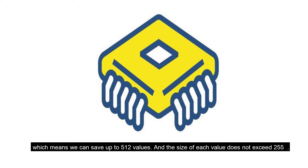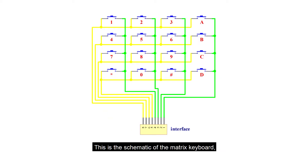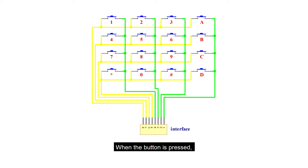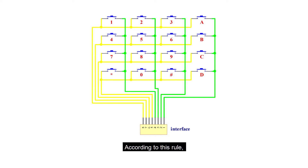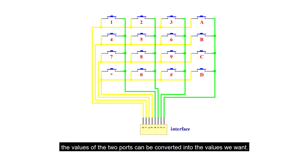This is the schematic of the matrix keyboard. Each button is equivalent to a switch. When the button is pressed, the two ports will be set to 1. For example, when A is pressed, pin 8 and pin 1 will be set to 1.